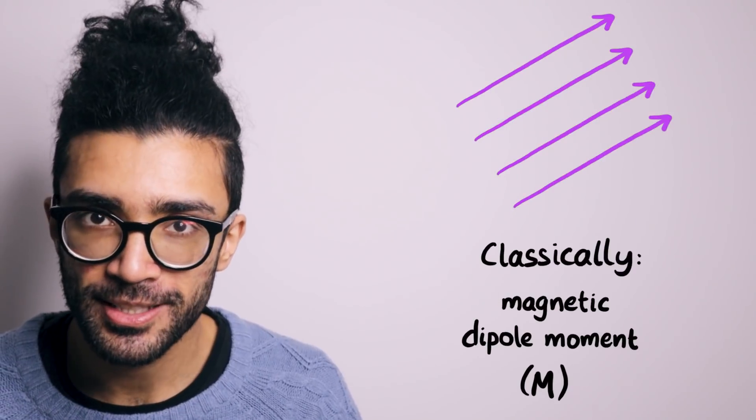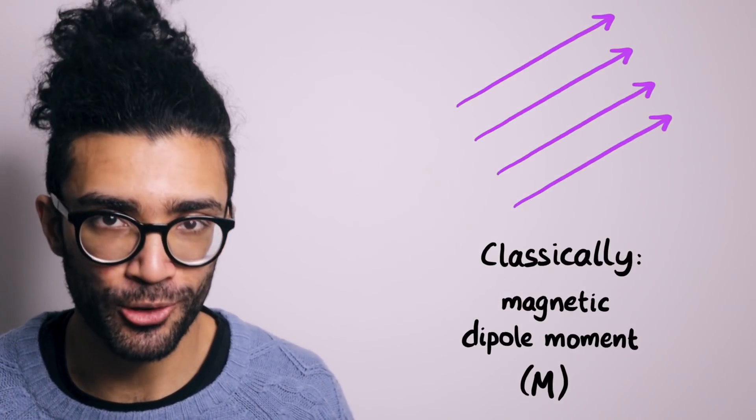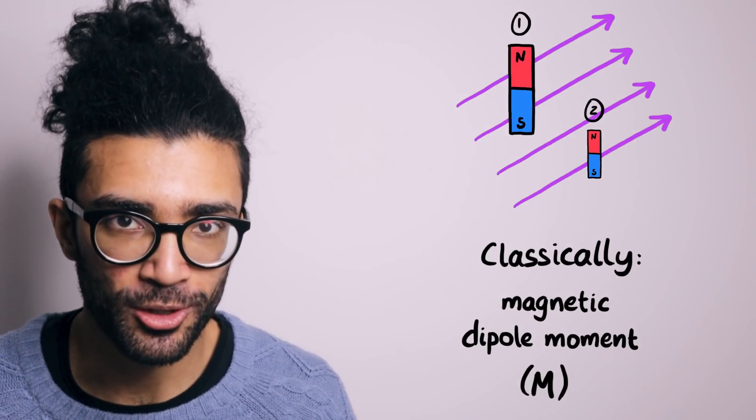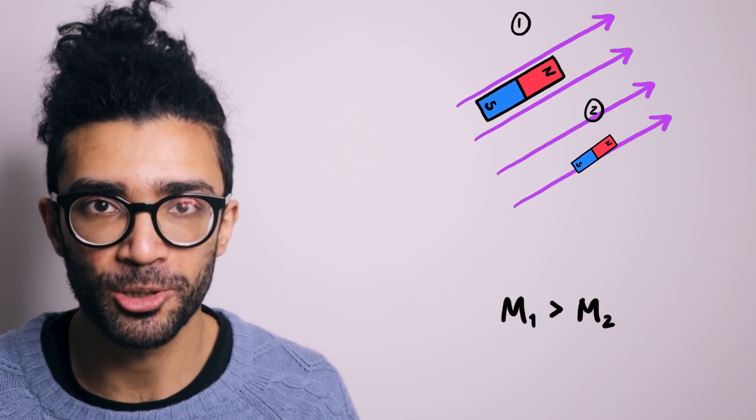Now, in classical physics, a magnetic dipole moment is simply a measure of the strength of a magnetic dipole, like a bar magnet. Usually, the stronger the bar magnet, the larger the magnetic dipole moment that it has.